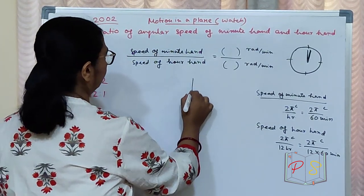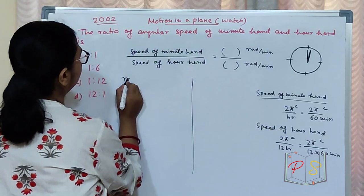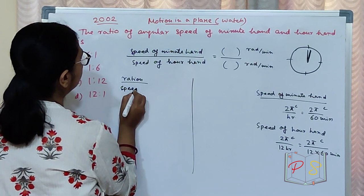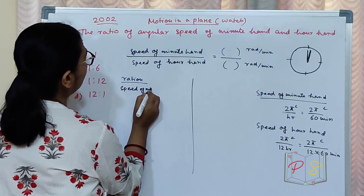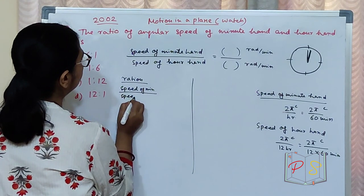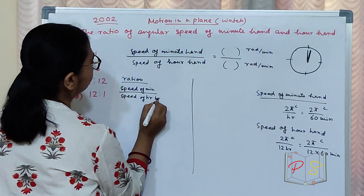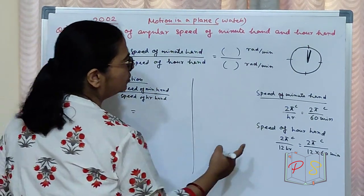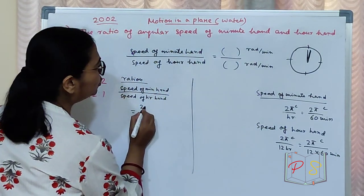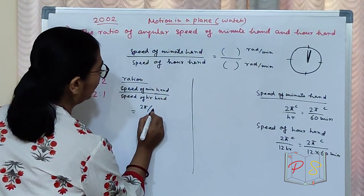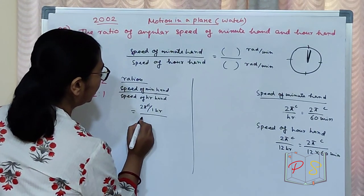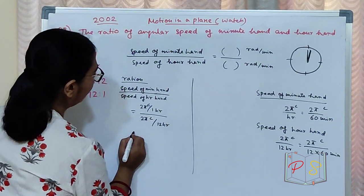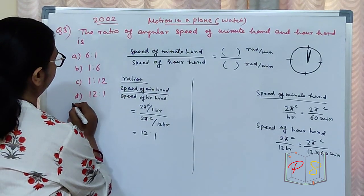The ratio: speed of minute hand divided by speed of hour hand equals (2π / 1 hour) divided by (2π / 12 hours), which gives 12 is to 1. The answer is 12 is to 1.